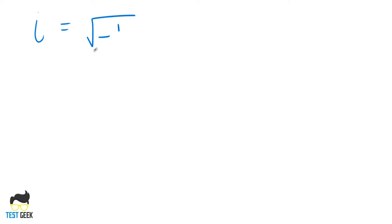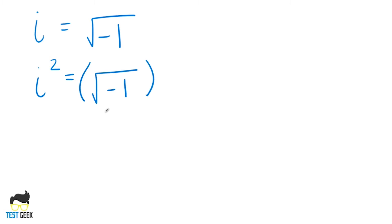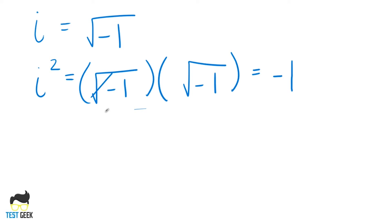Remember that i equals the square root of negative one — this is so important to remember. Representing the square root of negative one this way allows us to do all the regular operations on it without actually having a real number for it. So i squared is negative one, because i is the square root of negative one, and we can multiply square root of negative one times square root of negative one. When we multiply two of the same square root by each other, those square roots cancel out and we get the number inside the square root — in this case, negative one.